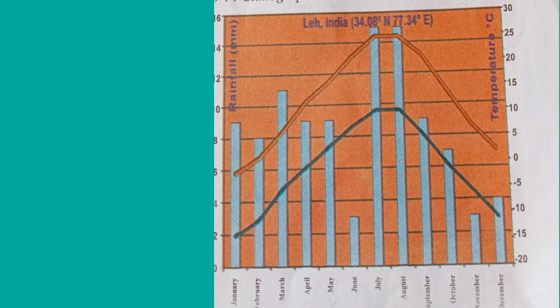From this climatograph we can see the maximum temperature, minimum temperature, highest rainfall, and lowest rainfall for Leh. Leh is located in the Himalayan range or cold desert area. The maximum temperature is 26 degrees Celsius, and the minimum is 3 degrees Celsius. Minimum temperature recorded ranges from minus 13 degrees Celsius to 8 degrees Celsius. July and August months have 15 millimetres rainfall. Minimum rainfall is 7 millimetres in October and 3 millimetres in November.